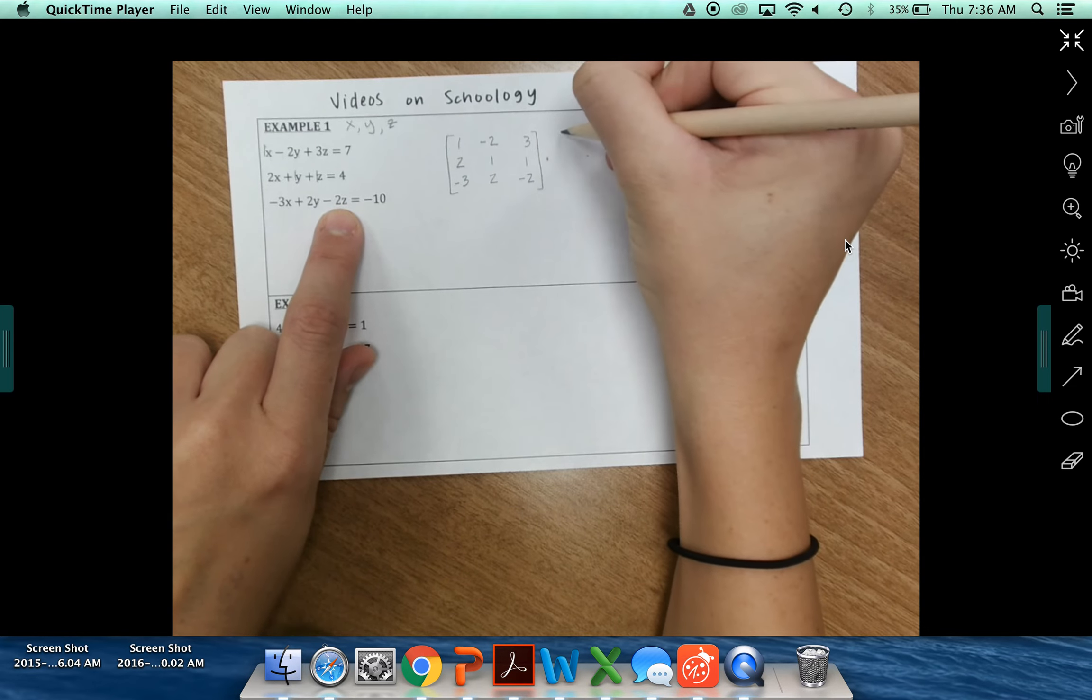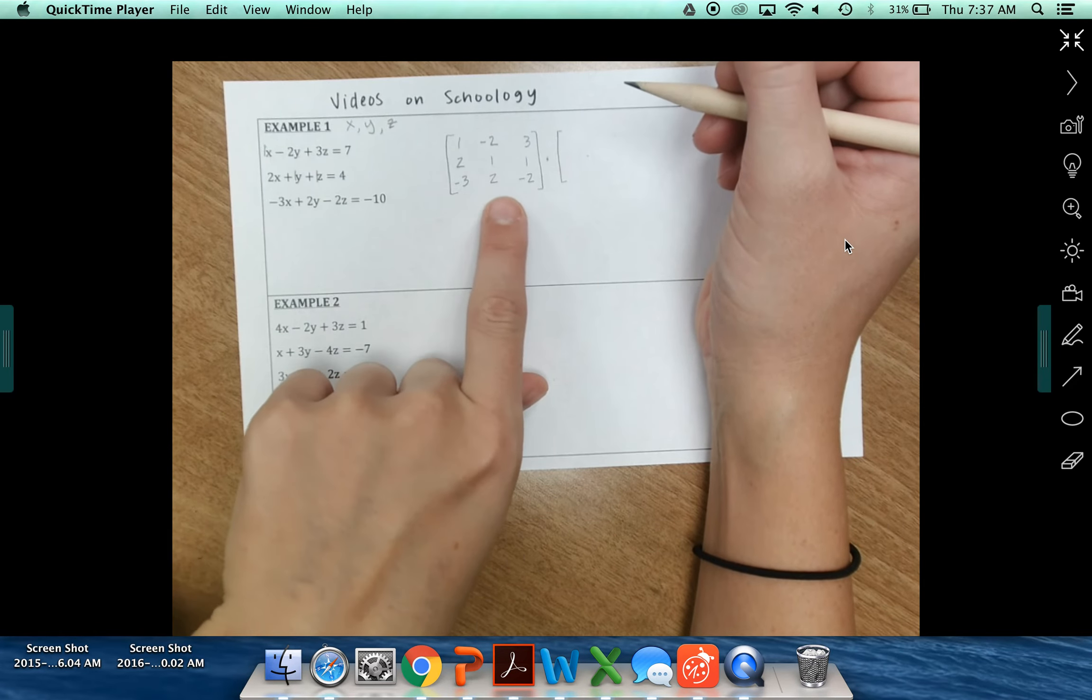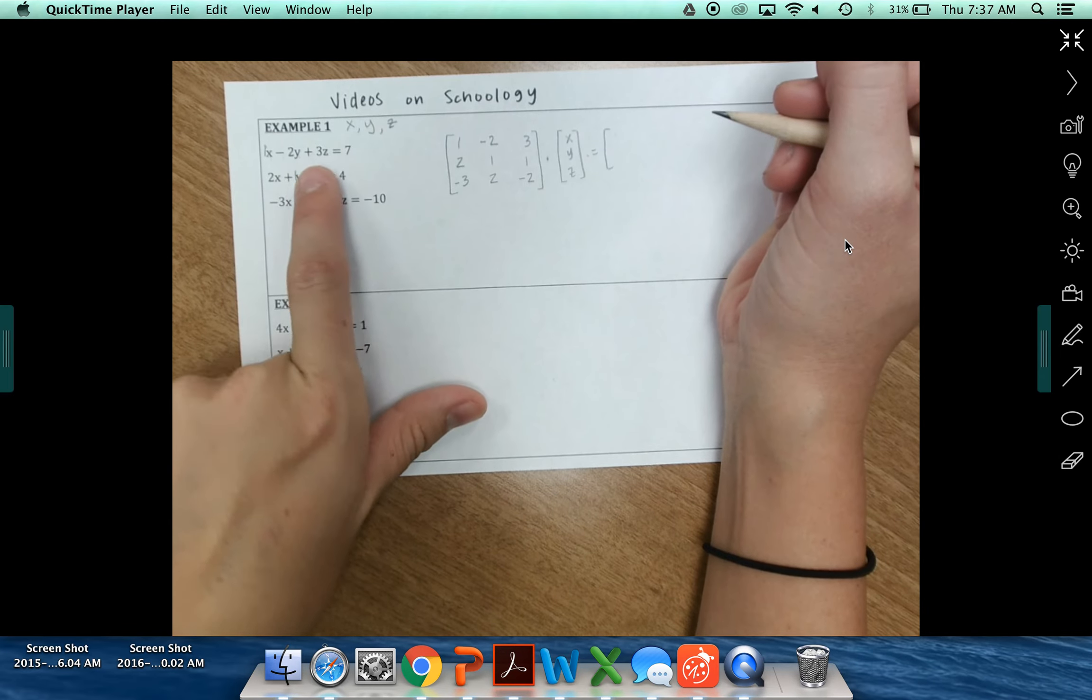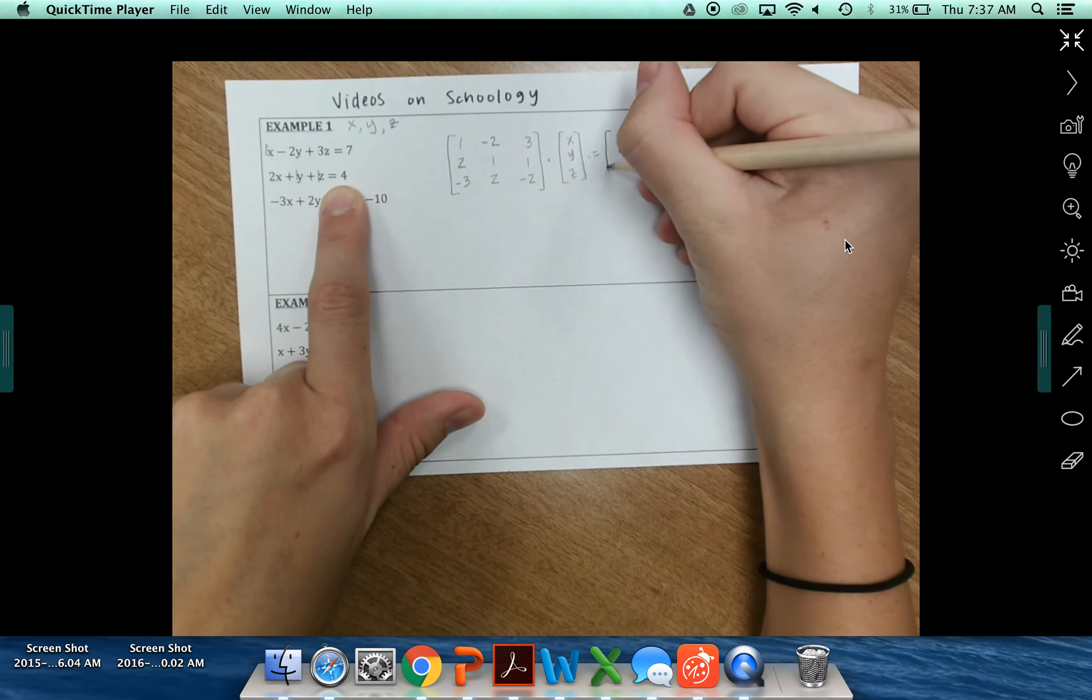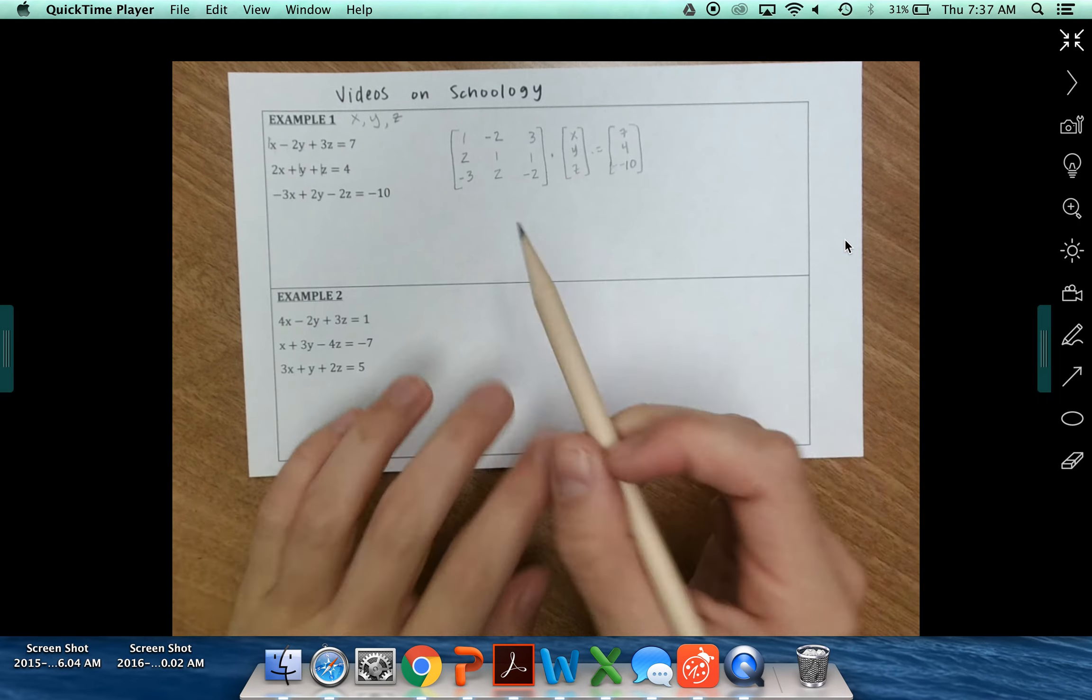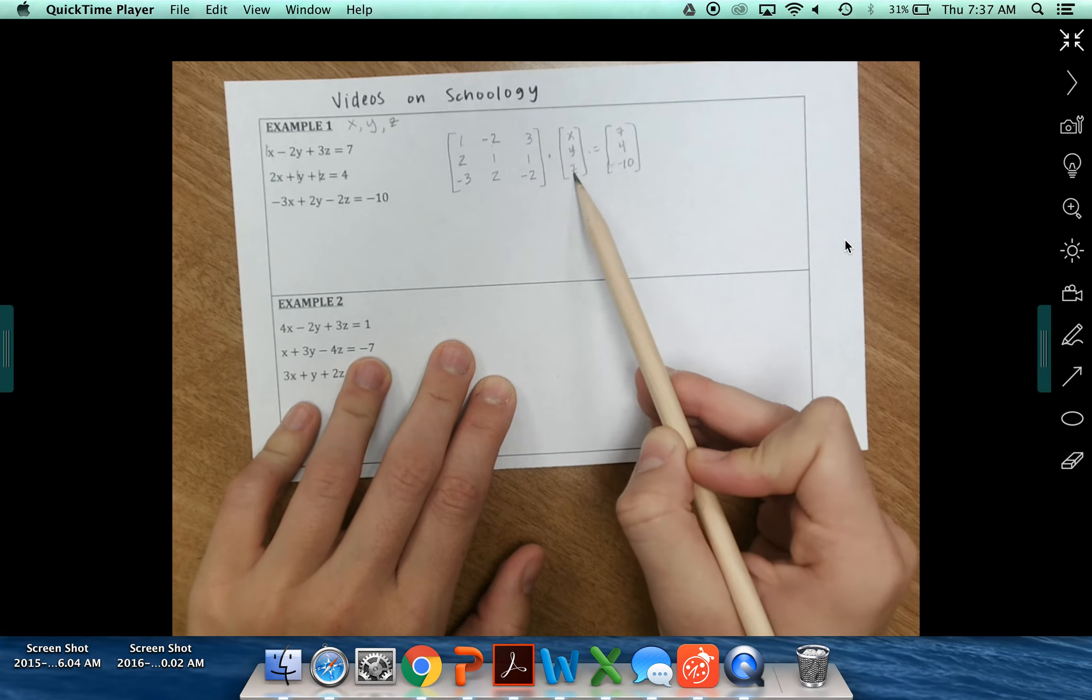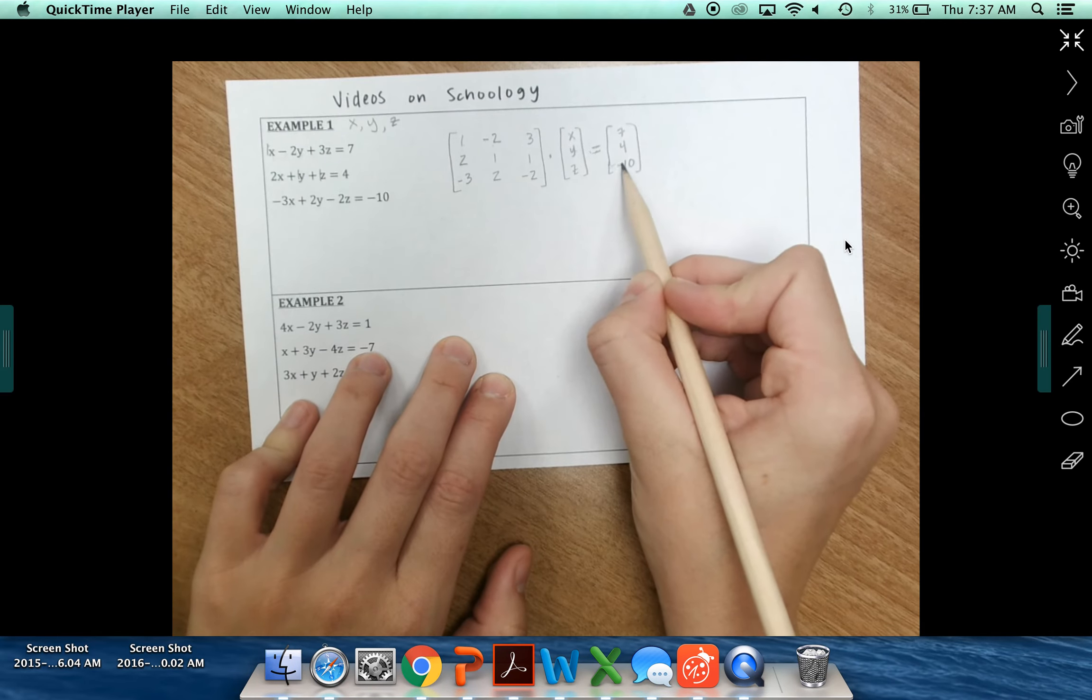That's multiplied by the order that our variable terms come at. So we know we have X, we have our Ys, we have our Z coefficients. So X, Y, Z equals all of our solutions, right? Or what these equations are equal to. So the first equation was equal to seven. And then four. And negative ten. So we're looking at these. They should resemble our equations. So we've got our X, Y, and Z coefficients. The order that those coefficients come in. So we have our X coefficients first, then our Ys, then our Zs. And then that is equal to what our equations are set equal to. So just make sure everything lines up and matches.